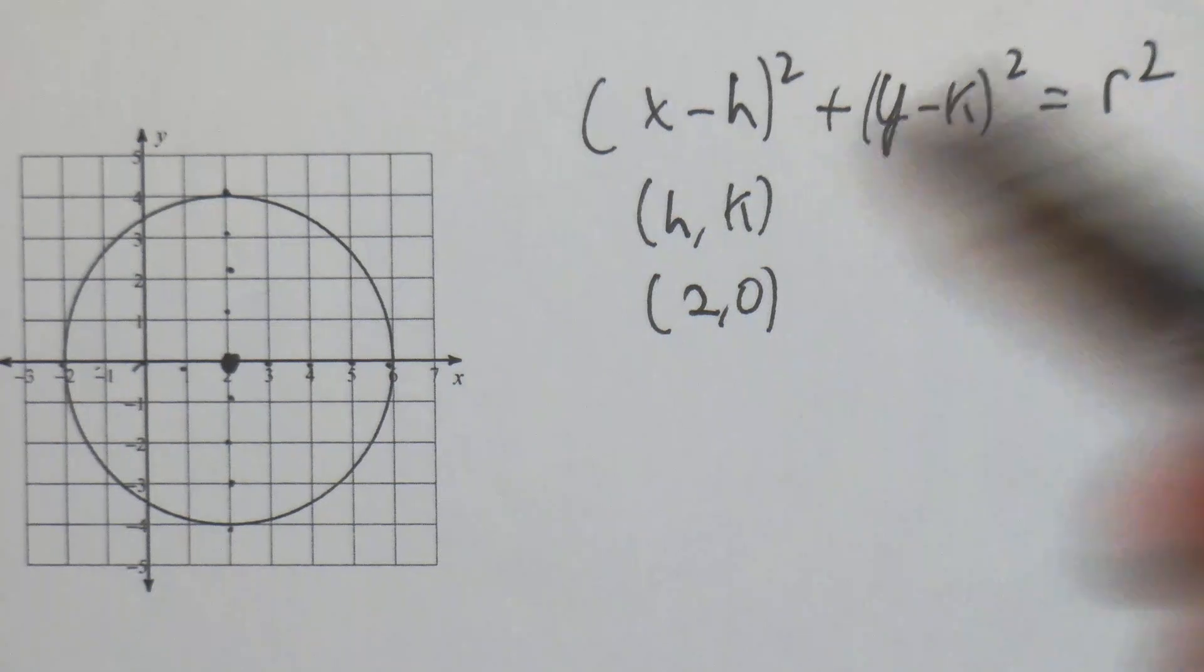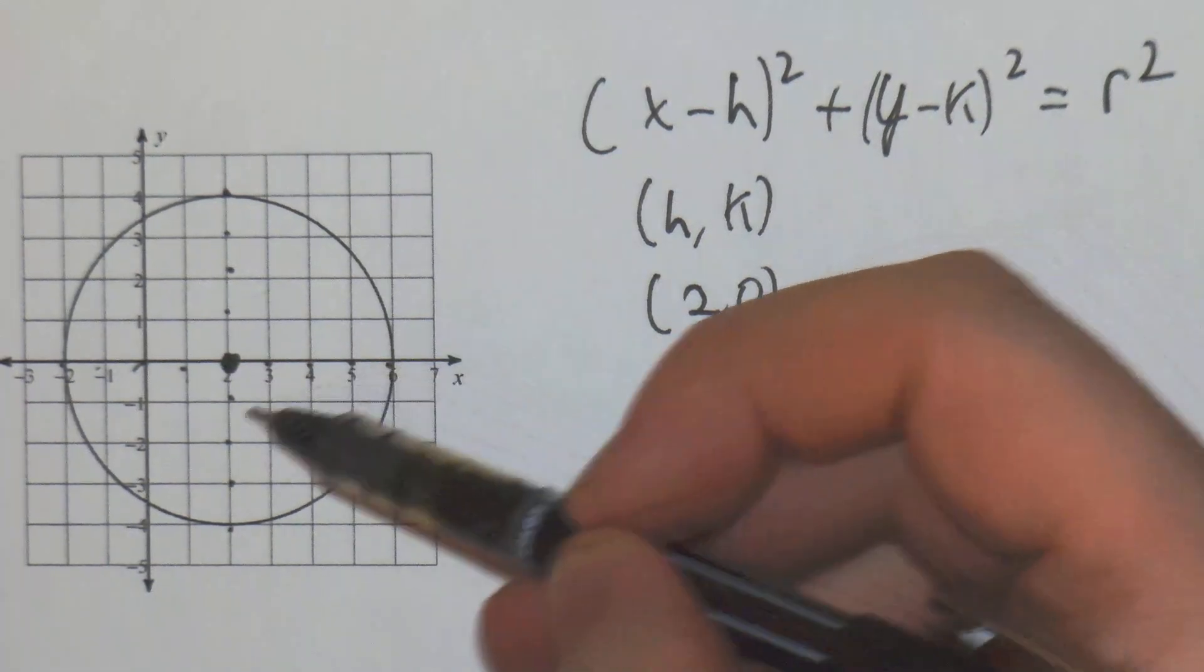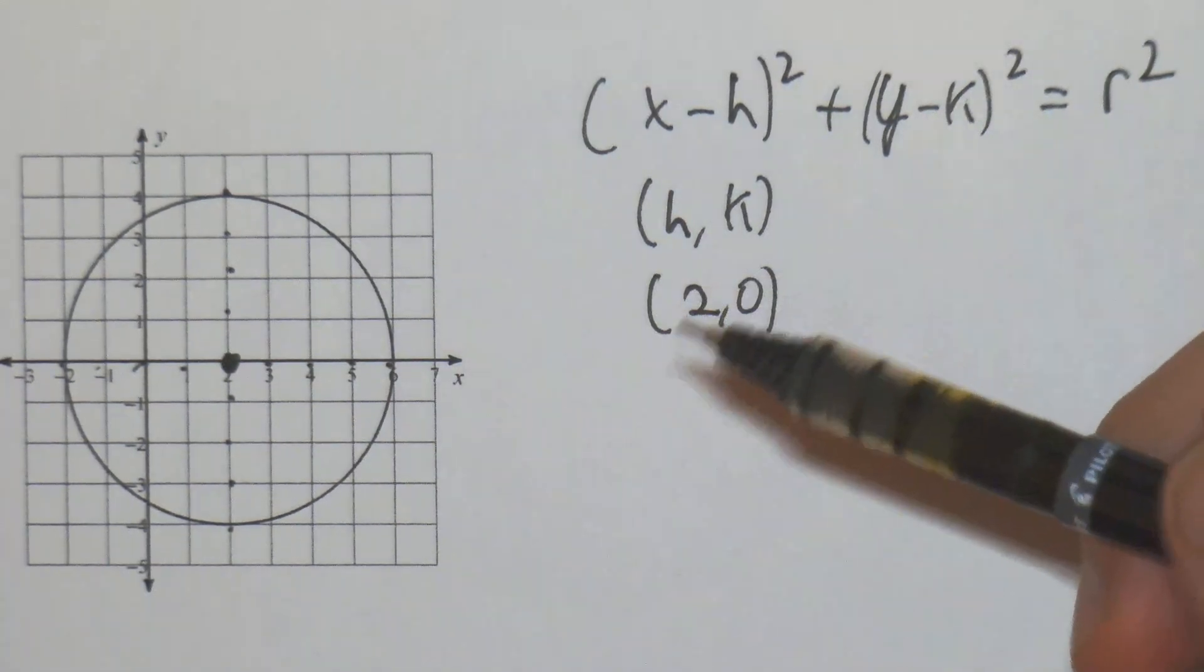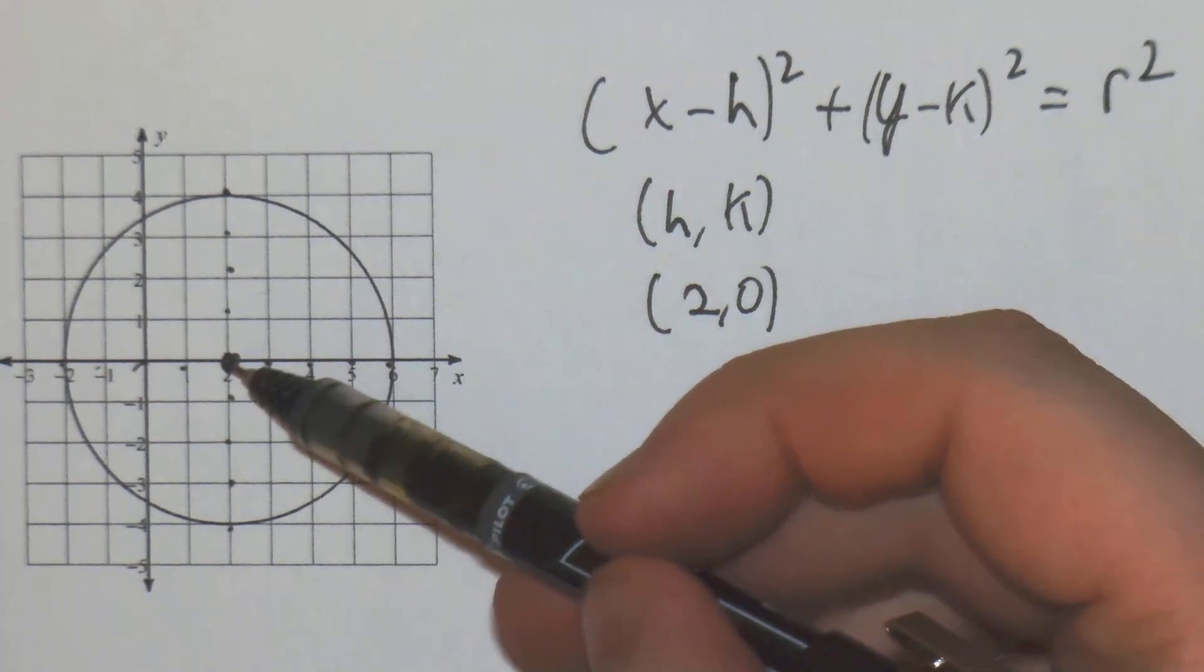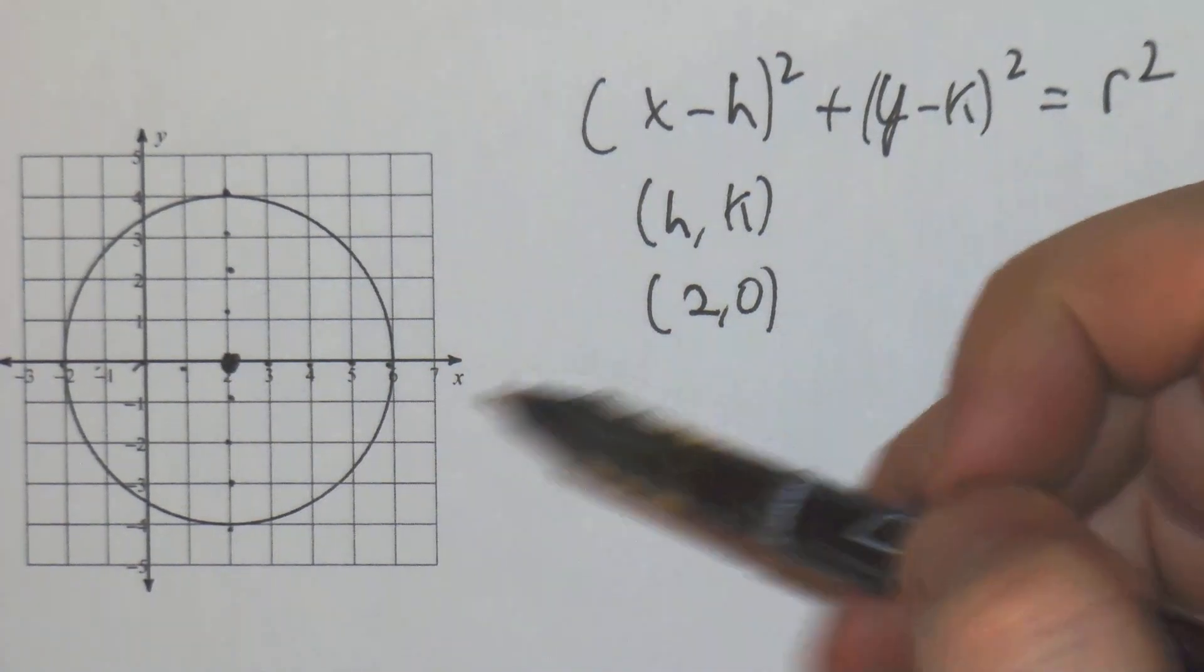Radius is going to be from the center to the edge of the circle. Choose something easy - you can't count diagonally, count horizontally or vertically.